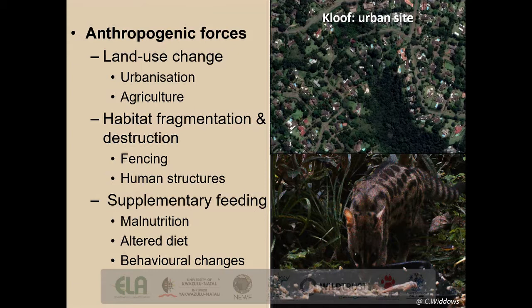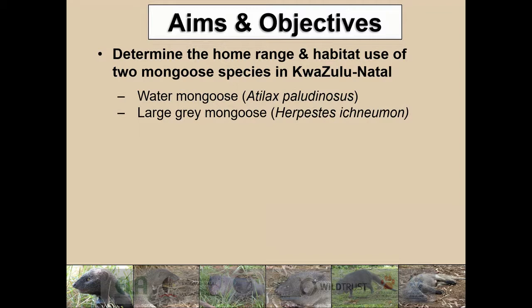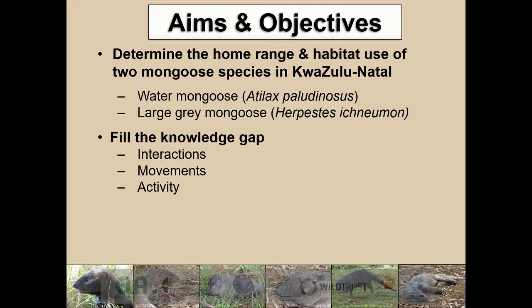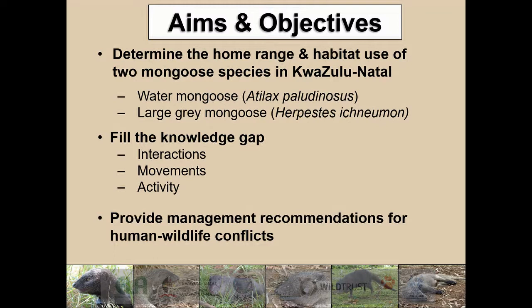The aim of our study was to determine the home range and habitat use of water mongoose and large grey mongoose within the KwaZulu region. We hope that this would enable us to fill the knowledge gaps that are present in terms of interactions, if any are present, as well as movement and activity. Because of the time constraints of this presentation, I will only be presenting results of the home range. We also hope to provide information to better conserve these species and to mitigate future human-wildlife conflicts between mongooses and humans.